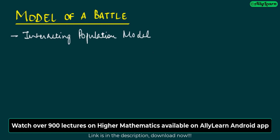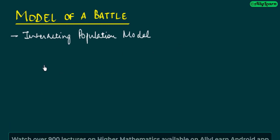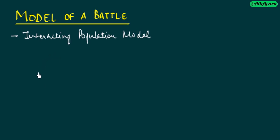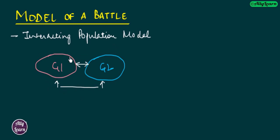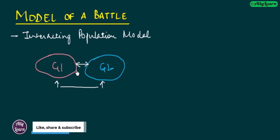What will happen in this model? Basically, we are going to model battles. What happens in battles? There are two groups of people — let's say G1 and G2 — and they will fight with each other. The populations will interact and there will be a reduction in population. If some people die in the battle, this is an interacting population model.